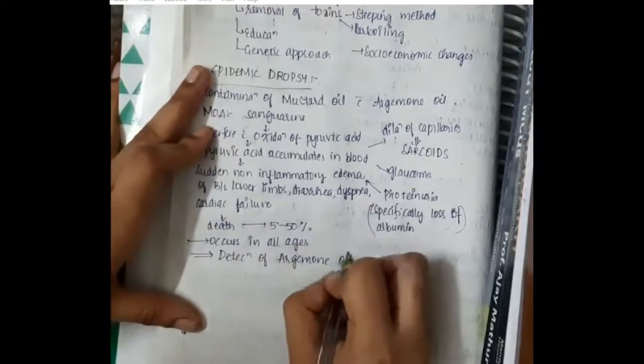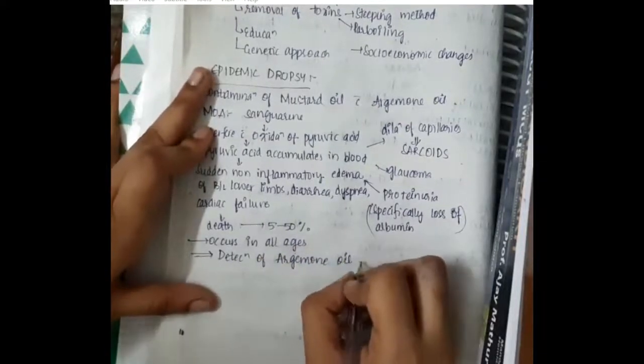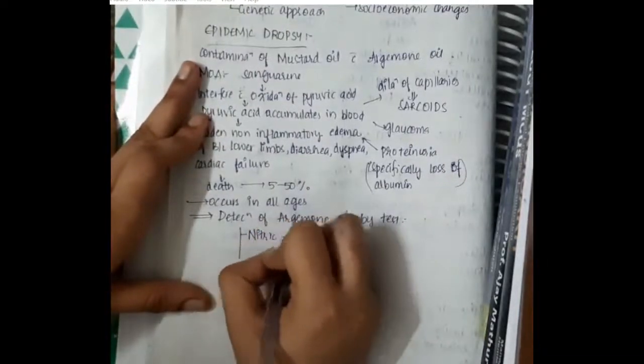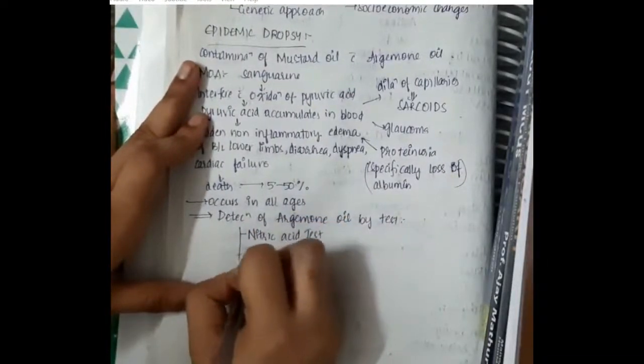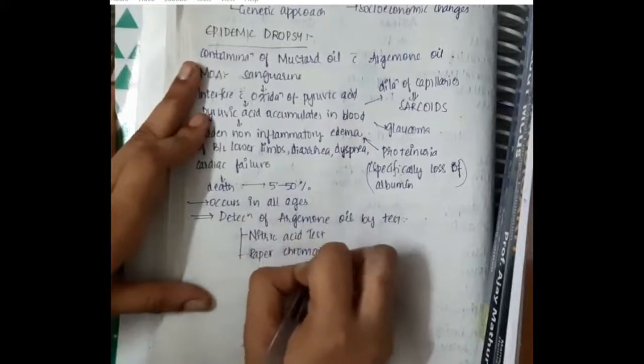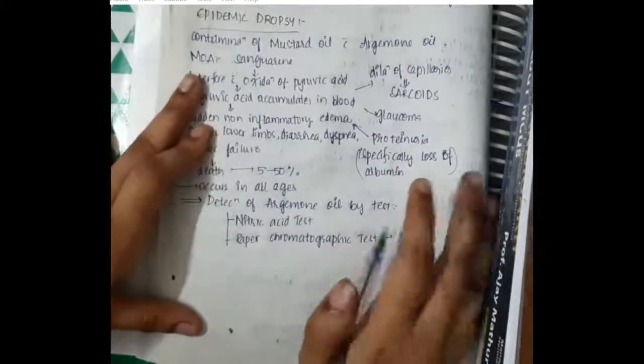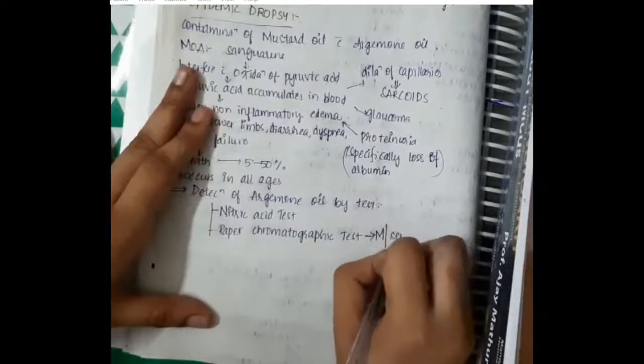The best tests for detection of argemone oil are two: one, we have nitric acid test; second, we have paper chromatographic test. Among these two, paper chromatographic test is most sensitive.